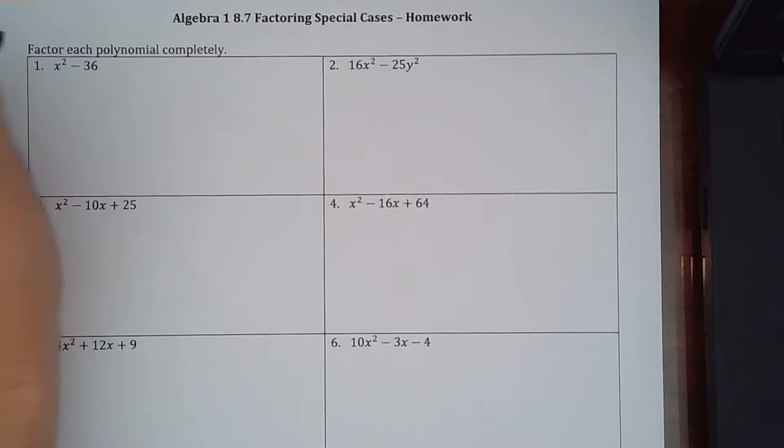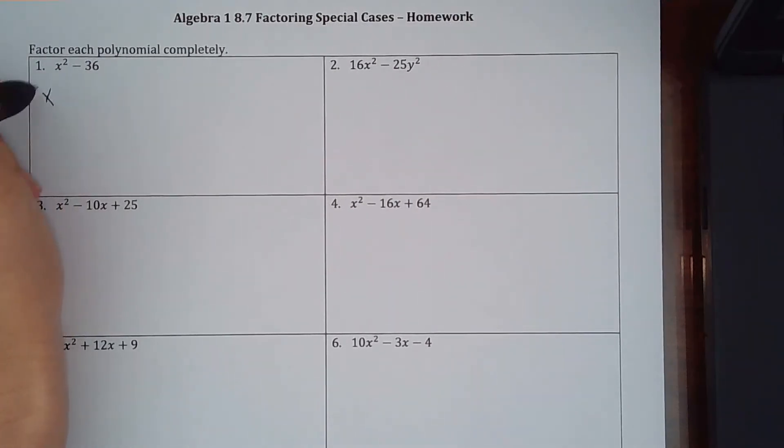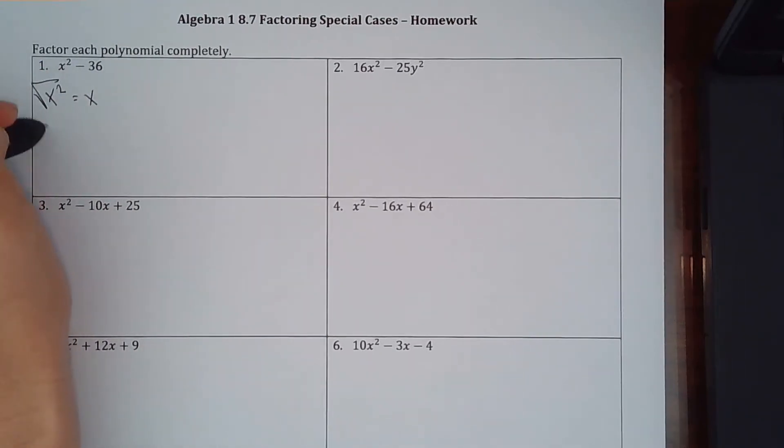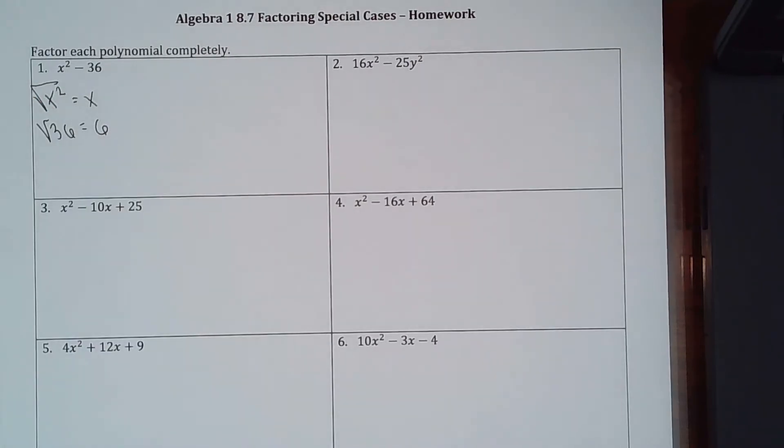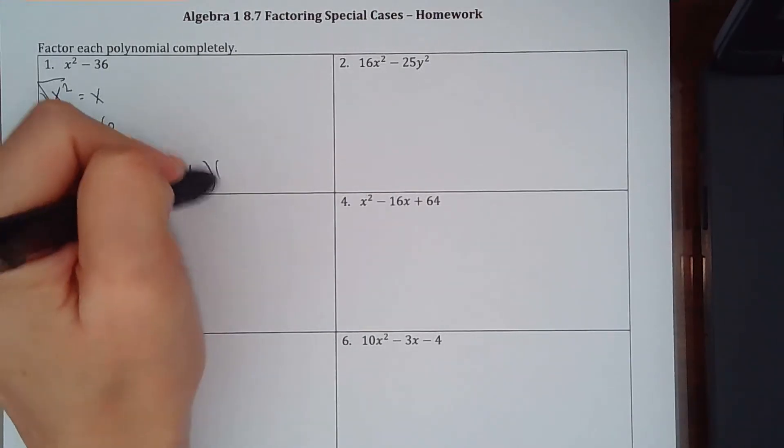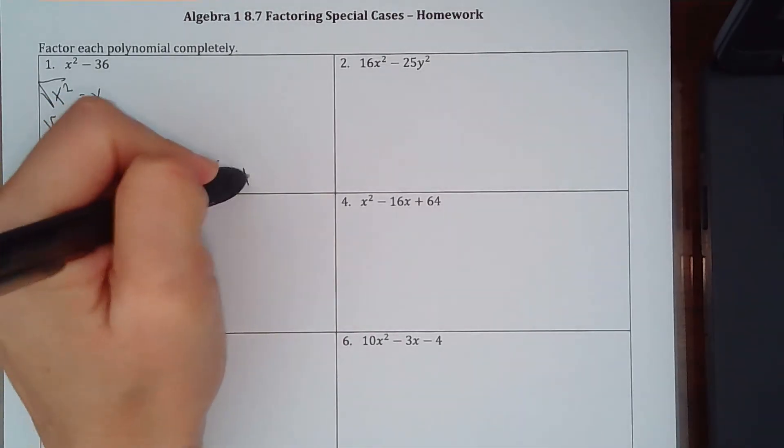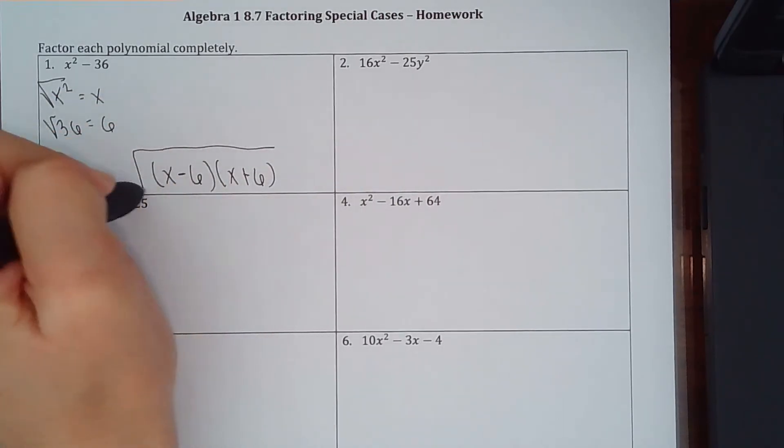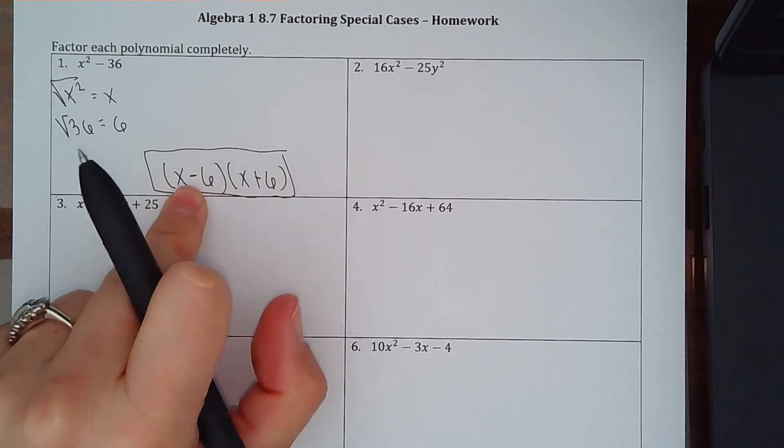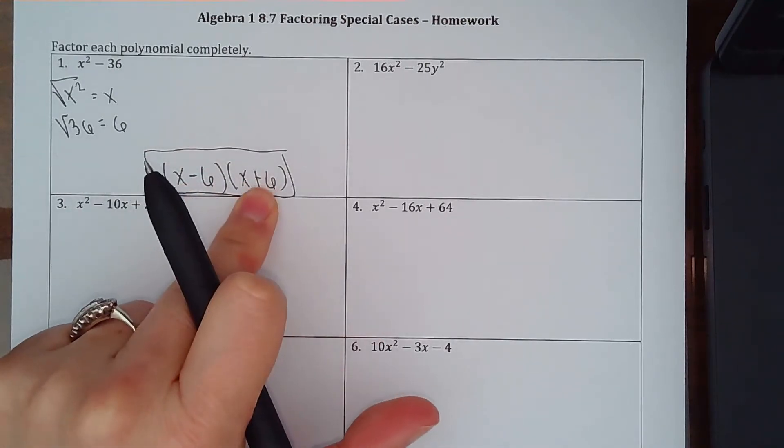So I'm going to go ahead and do number one with you. I'm going to take the square root of x squared, which is going to give me x, and I'm going to take the square root of 36, and that's going to give me 6. So what I know is I'm going to have one version as x minus 6, and the other version as x plus 6. So I take my x and my 6, and one of them is a negative, and the other one's a positive.